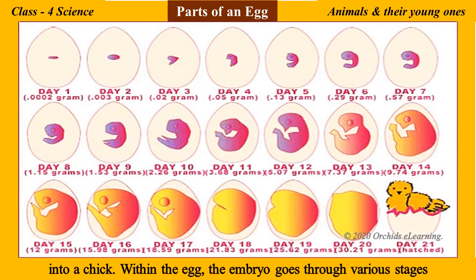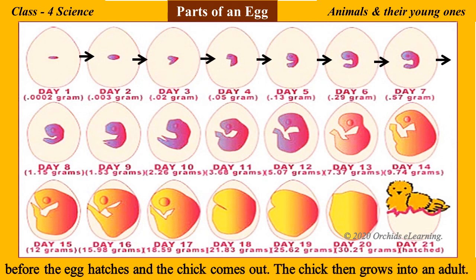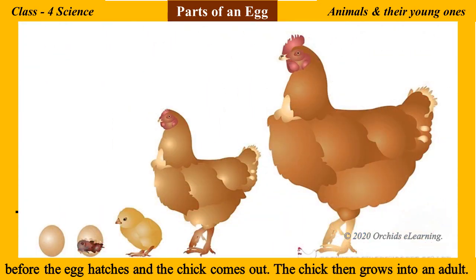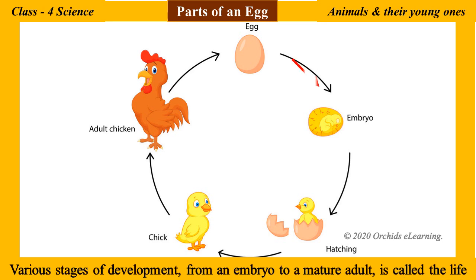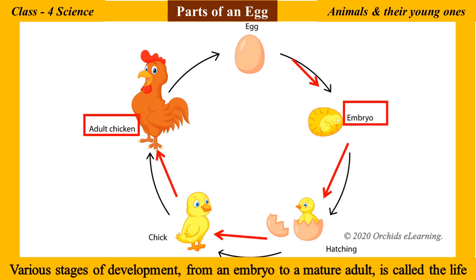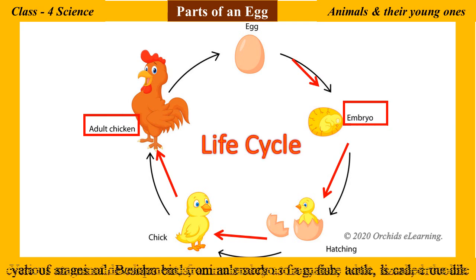The embryo goes through various stages of development before the egg hatches and the chick comes out. The chick then grows into an adult. The various stages of development from an embryo to a mature adult is called the life cycle of an animal.